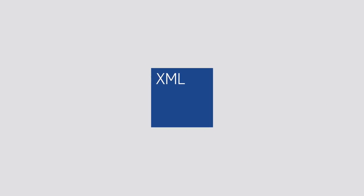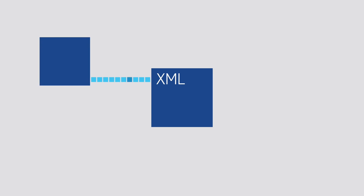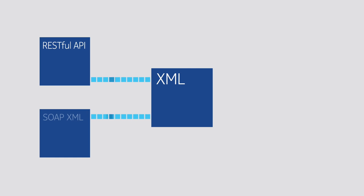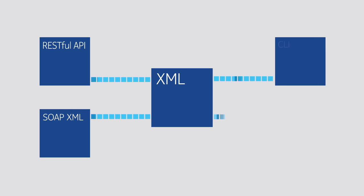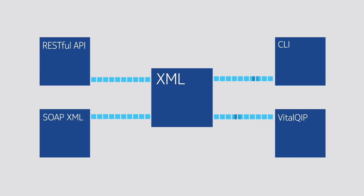IP objects can also be exported in XML format, for use within the new RESTful API input, SOAP XML web service, CLI, or Vital QIP's infrastructure import capability.